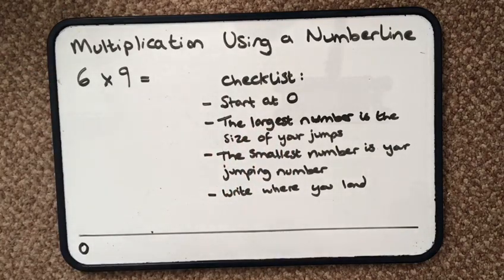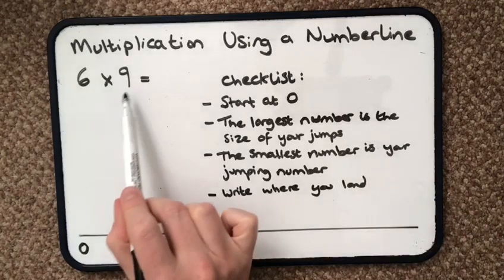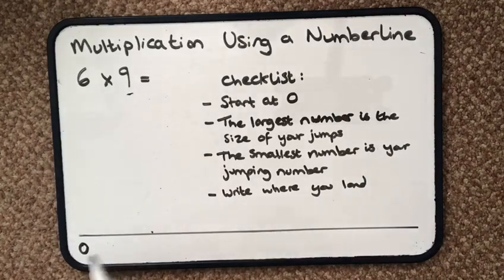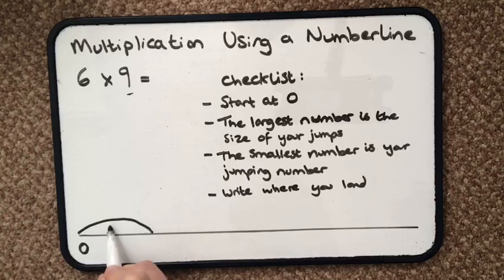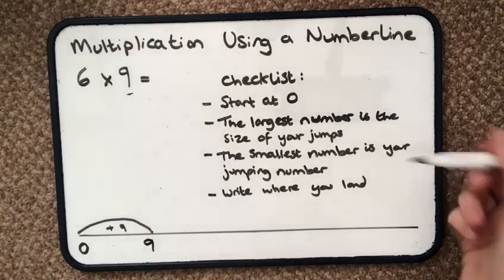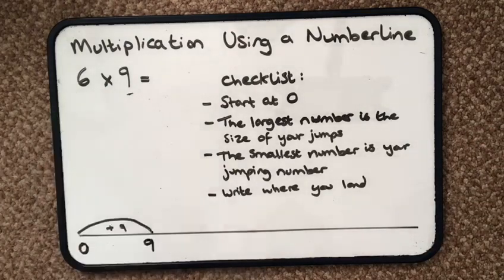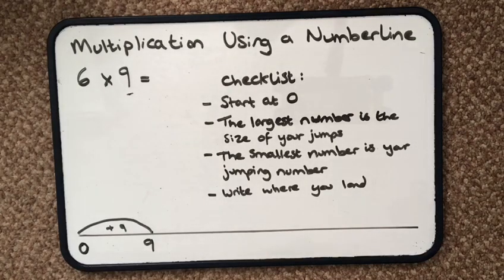My checklist says I start at 0, and the largest number is the size of my jump. So I'm going to be jumping every time a jump of 9, and I write where I land on the number line. It says the smallest number is your jumping number, so that tells me how many times I'm going to jump.